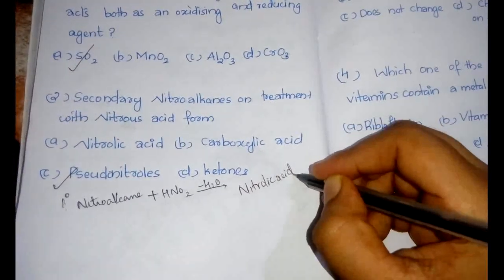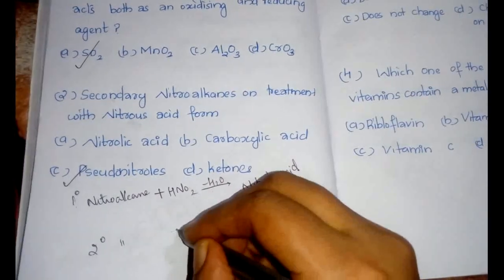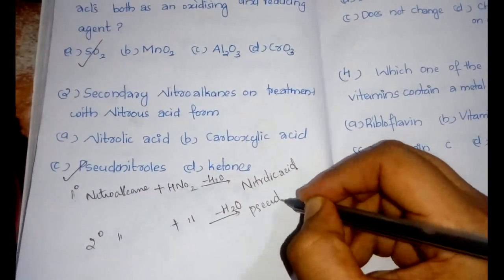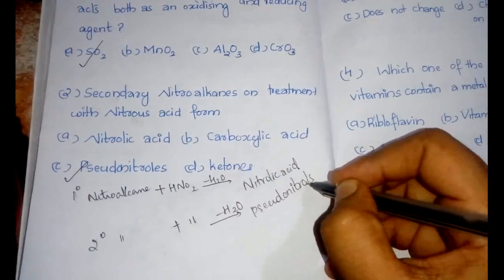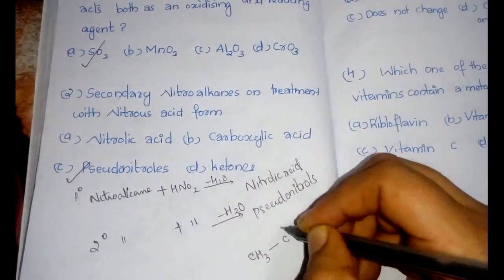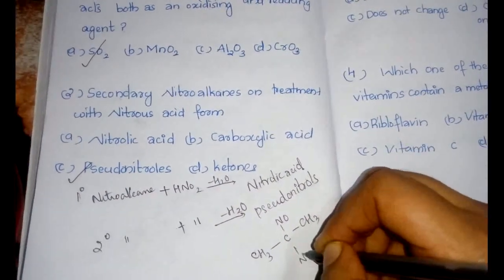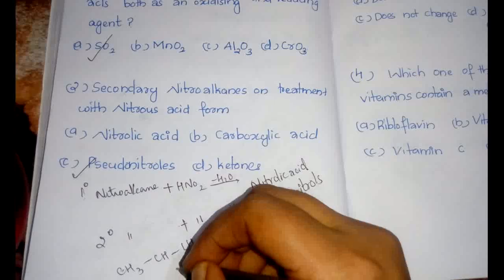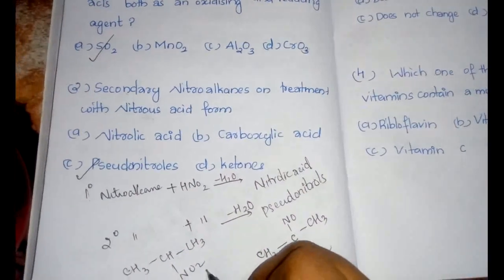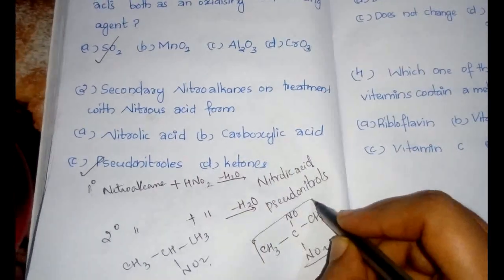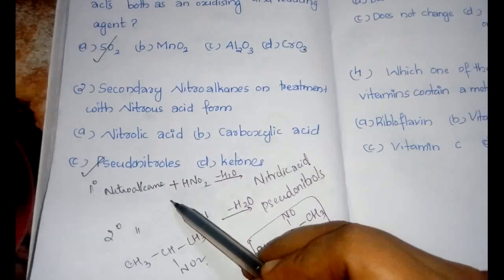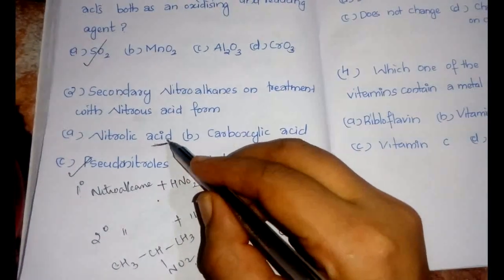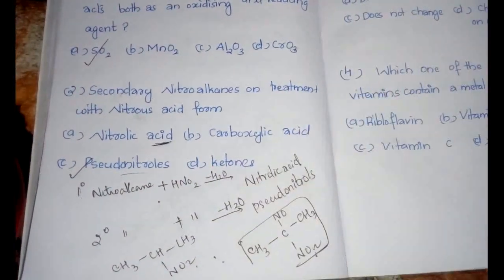Secondary nitro alkanes plus HNO2 would give minus H2O and would give pseudonitrols. The structure of pseudonitrol will be like this: CNOCH3NO2. If the secondary nitro alkanes has the structure CH3CHCHCH3NO2, then the pseudonitrol would be this one. So this is a test to distinguish between the primary nitro alkanes and the secondary nitro alkanes. Nitrolic acid is formed by the primary nitro alkanes and pseudonitrols by the secondary nitro alkanes.